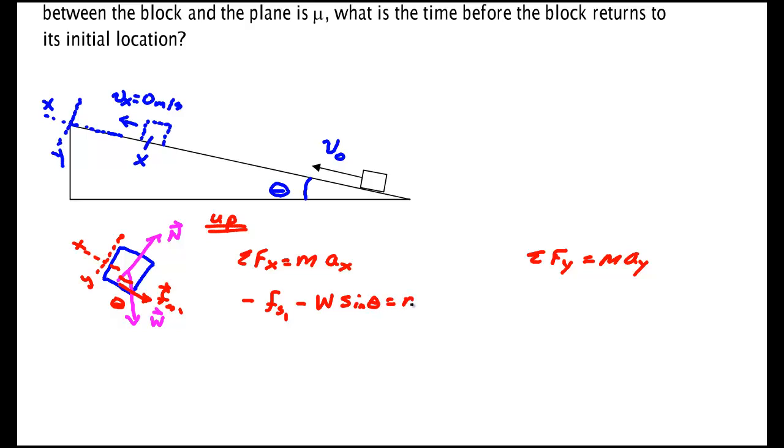That's equal to maₓ. In the y direction, the normal, the way I've drawn my axis, is minus the normal. The weight has a positive component along y since I said positive y is down. That's this side, the adjacent side, so that's plus W cos θ. Because of the way I put my axis, there's no acceleration in y.